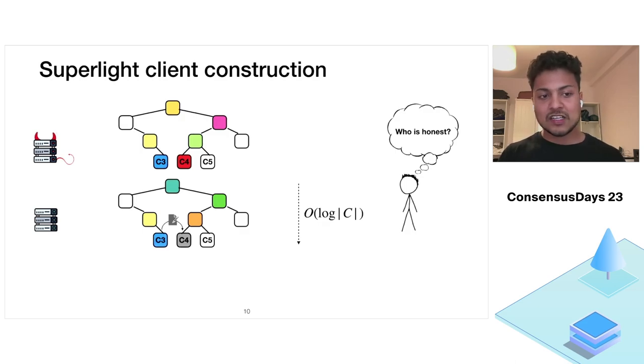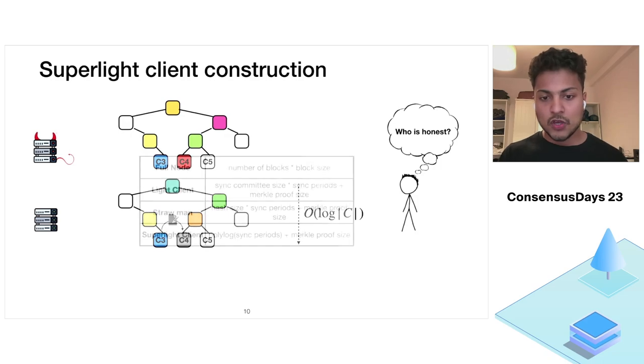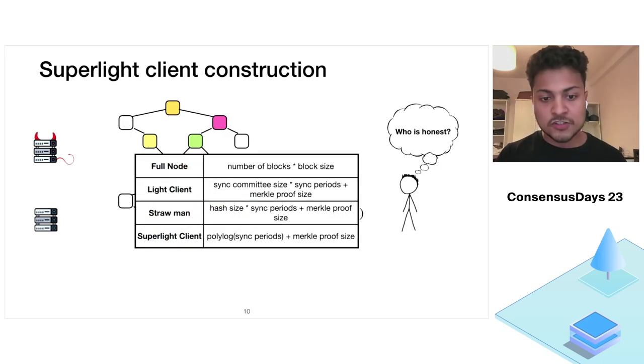The communication complexity between the prover and the verifier here is proportional to the depth of the tree, which is log of the number of committees. So the overall complexity of the super light client construction is poly log of the number of sync periods plus the Merkle proof size.